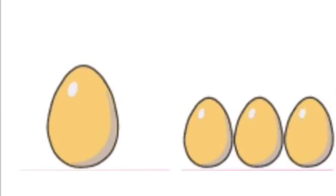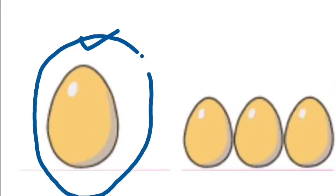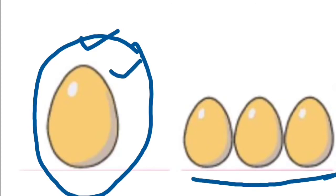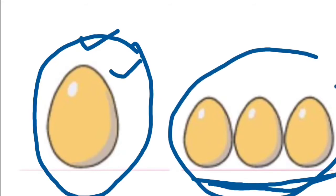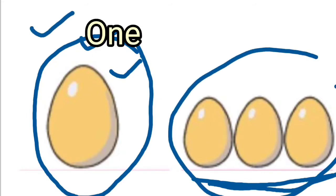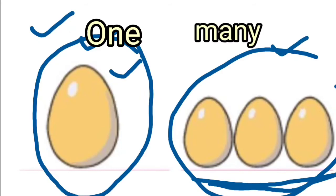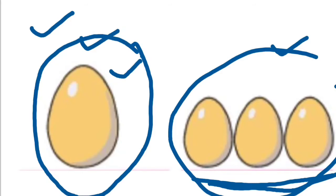Let's see this picture. What is this? This is an egg. How many eggs are there? Only one egg. And there are many eggs. One egg — many eggs. One egg — many eggs. Isn't it right? Very good!